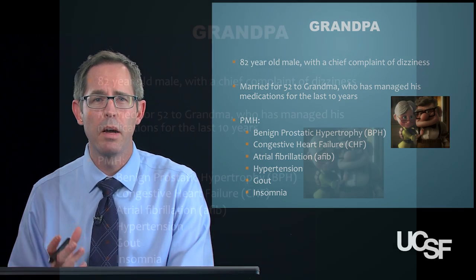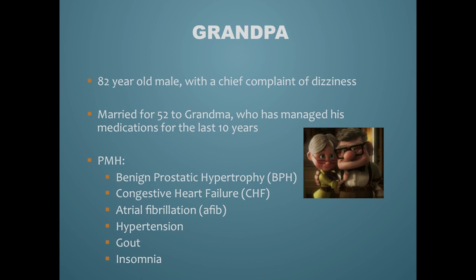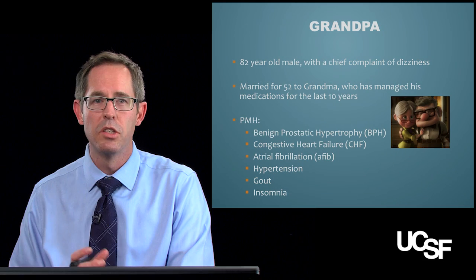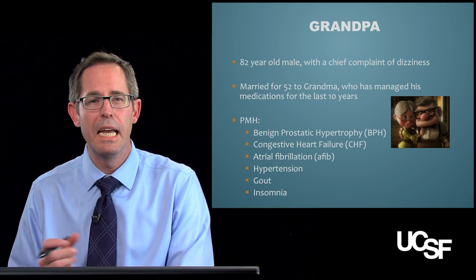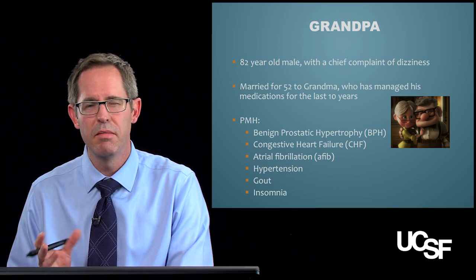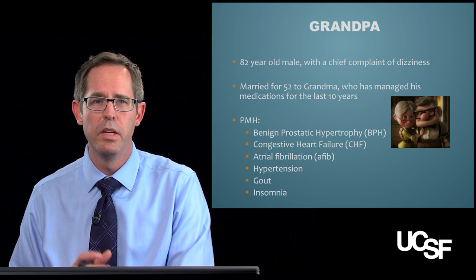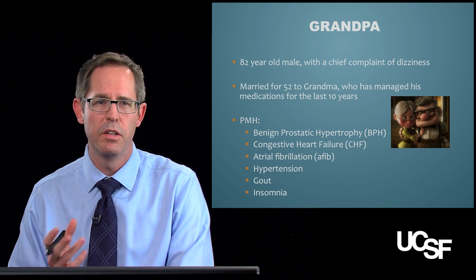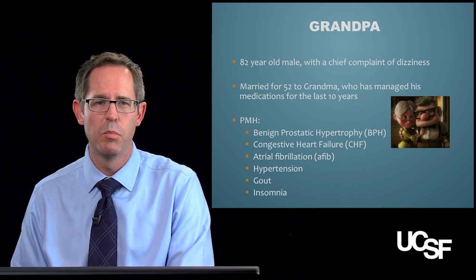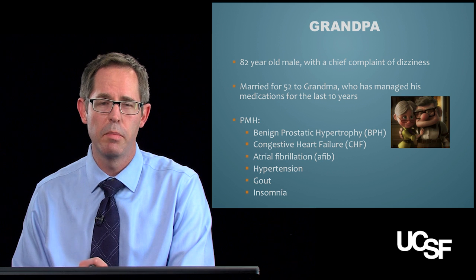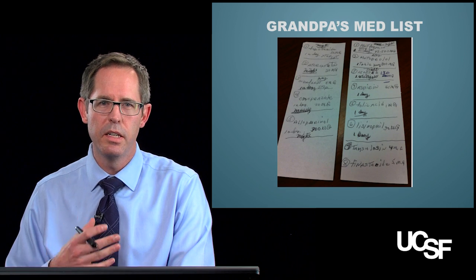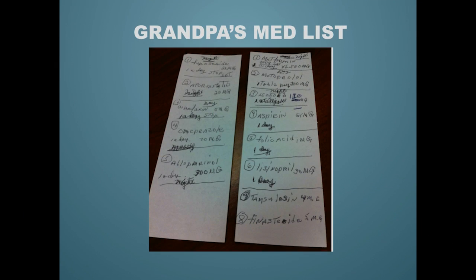So who's grandpa? He's an 82-year-old who comes to you with a chief complaint of dizziness. Grandpa's been married to grandma for 52 years, but for the last 10, it's actually grandma who managed most of his medications. Like many 82-year-olds, he has a fair number of chronic disease states, including BPH, congestive heart failure, atrial fibrillation, hypertension, gout, and insomnia. And he comes into your clinic and hands you this med list.